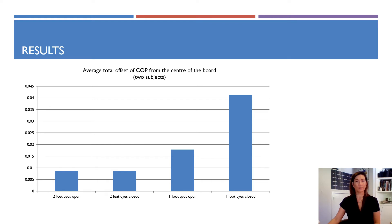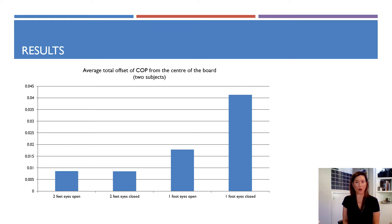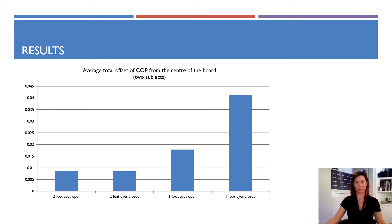Here we have our results. As you can see from the graph, there is little variation evident between the two feet conditions — eyes open and eyes closed. We see an increase in the change of the centre of pressure offset, or sway, when the base of support was decreased by removing one foot, so from two feet to one foot. This condition decreased the amount of somatosensory information available. Then we see a significantly larger sway in the one foot, eyes closed condition, which obviously had no vision and retained the decreased somatosensory information of the one foot.